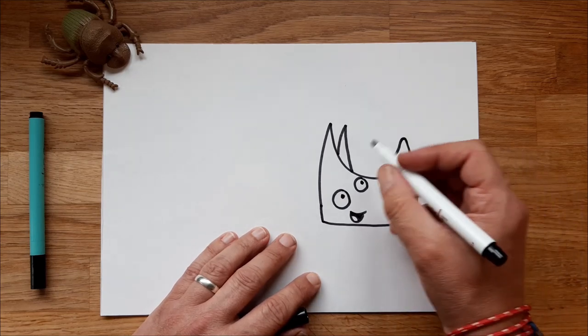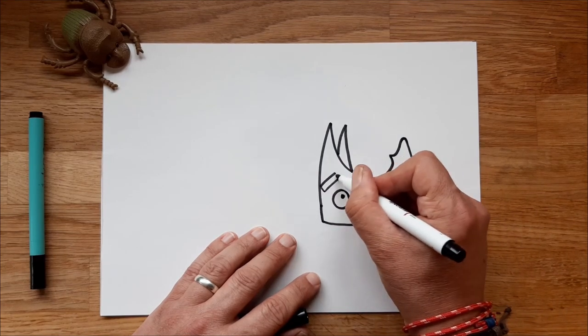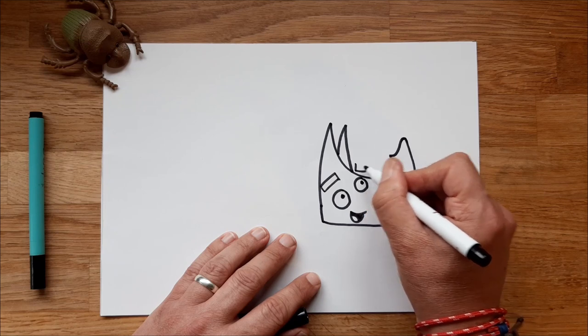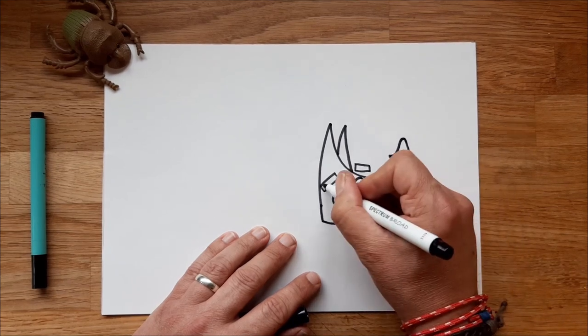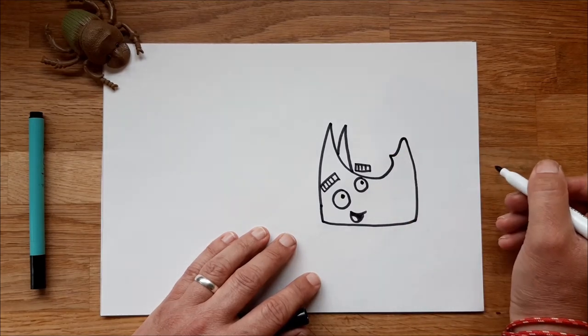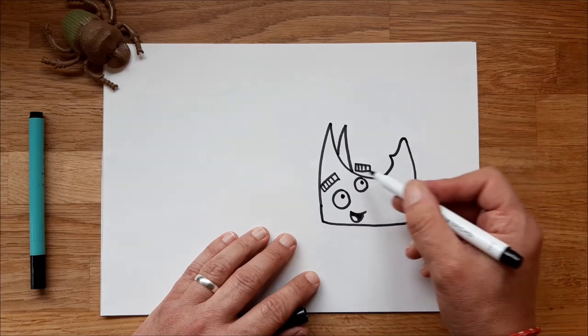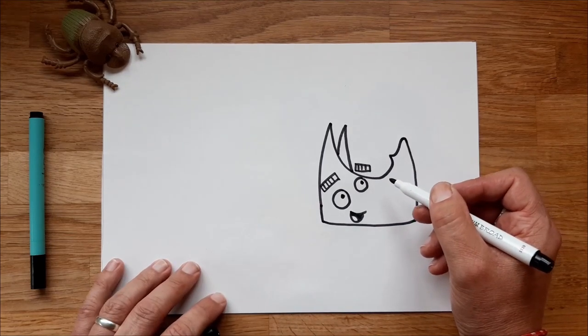Next, of course, we're going to have the chunky eyebrows that all my characters have. So two little rectangles. It's okay if they hover above his head. You know, with illustrations, you can defy the laws of nature and physics. So he's very surprised, he's very happy, his eyebrows are floating above his head like that.